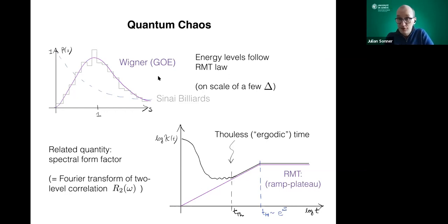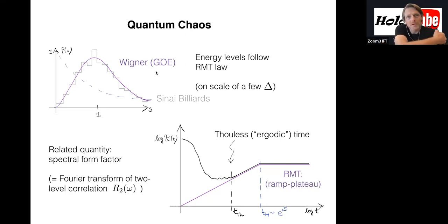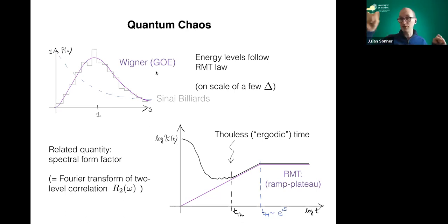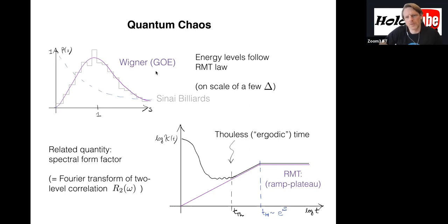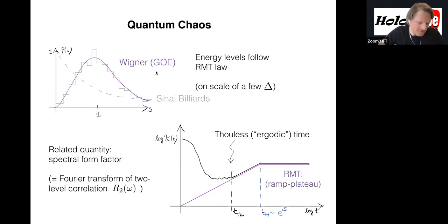The ensemble means you don't have one quantum theory — you have an ensemble with a measure specifying how likely it is to get each individual member. Then you calculate quantum averages and average them over a classical probability distribution. That's why this is not a single quantum system; it's a family of quantum systems.